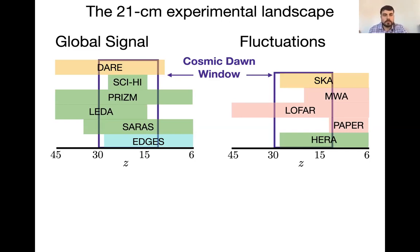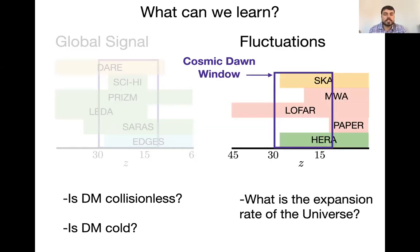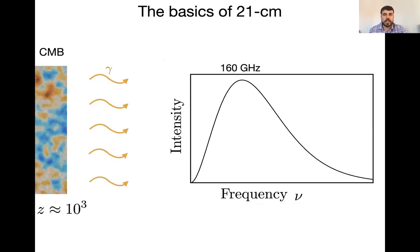The questions I'm going to ask are: using the global signal, is dark matter collisionless — can we know whether it interacts with us? Is that matter cold, and does it cluster at all scales? And using the fluctuations, what is the expansion rate of the universe during cosmic dawn — in between us and the CMB — because these two measurements disagree with each other. So let's start talking about physics.